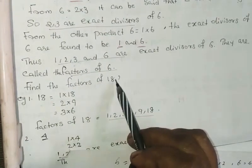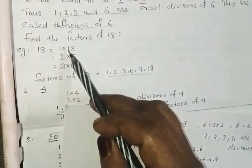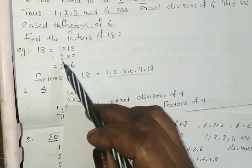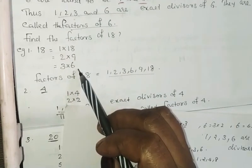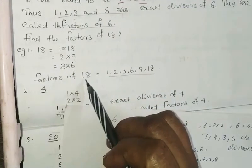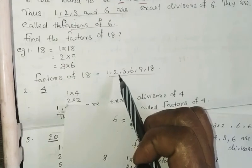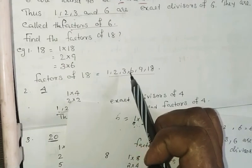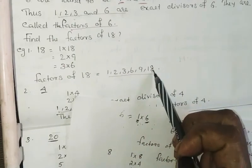We find the factors of 18. 18 can be written as 1 into 18, 2 into 9, 3 into 6. Therefore the factors of 18 are 1, 2, 3, 6, 9, 18.